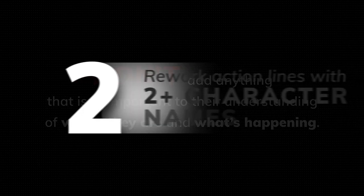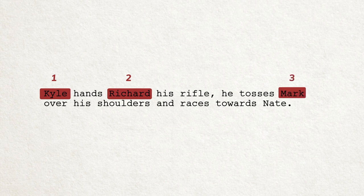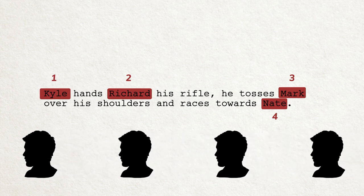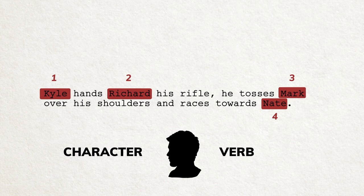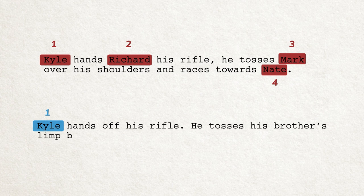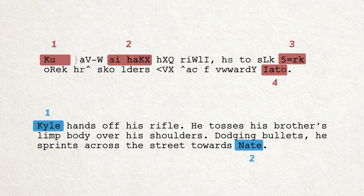Number two: remove or rework any action lines with two or more character names. For example: 'Kyle hands Richard his rifle. He tosses Mark over his shoulders and races towards Nate.' The mind can only visualize so many characters at a time. It's hard for a reader to visualize multiple characters doing multiple different things within one sentence. Split up your sentences based upon the character and the verb. For example: 'Kyle hands off his rifle. He tosses his brother's limp body over his shoulders. Dodging bullets, he sprints across the street towards Nate.' This makes it easier for your reader to fully focus on the story.